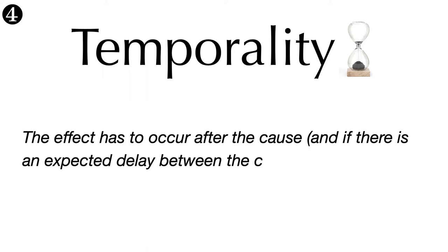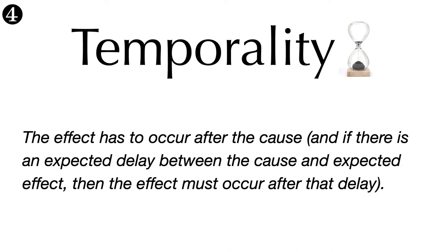Criterion four is temporality. The effect has to occur after the cause, and if there is an expected delay between the cause and the expected outcome, then the effect must occur after that delay. If we suspect A causes B, we would need to observe a change in A before we see a change in B. A clear sequence also helps us determine the direction of causality — is A more likely to cause B, or B more likely to cause A? When we only have cross-sectional study data and don't know the order in which things happened, we cannot even assess temporality.